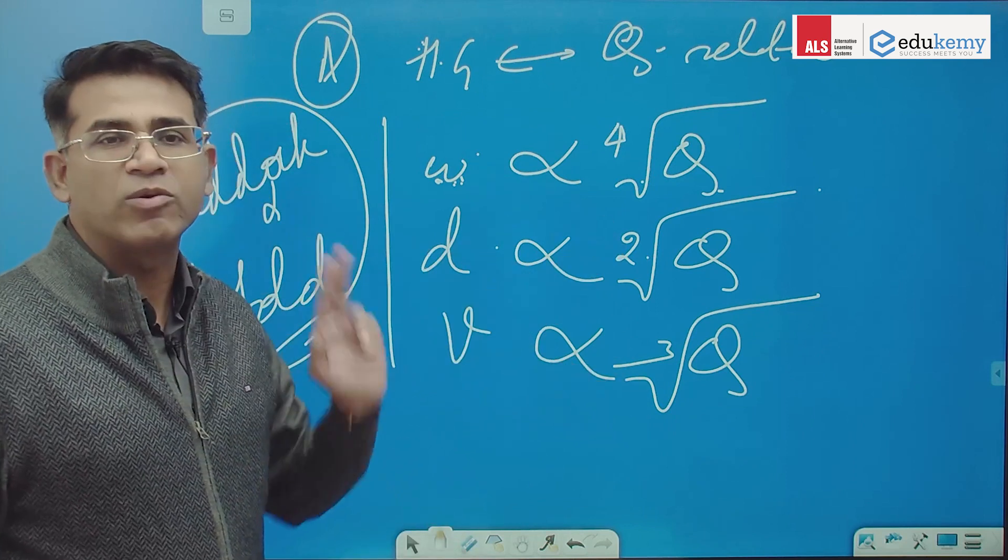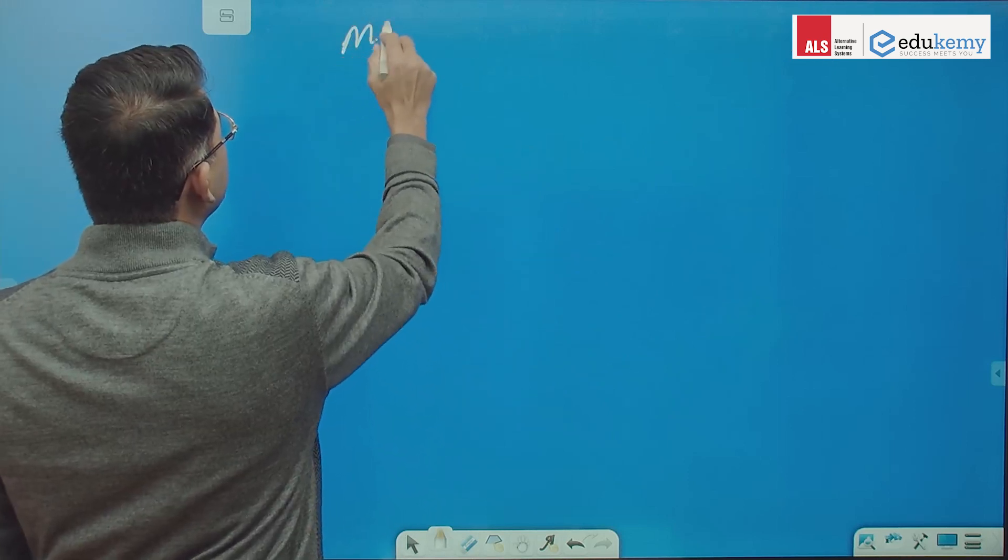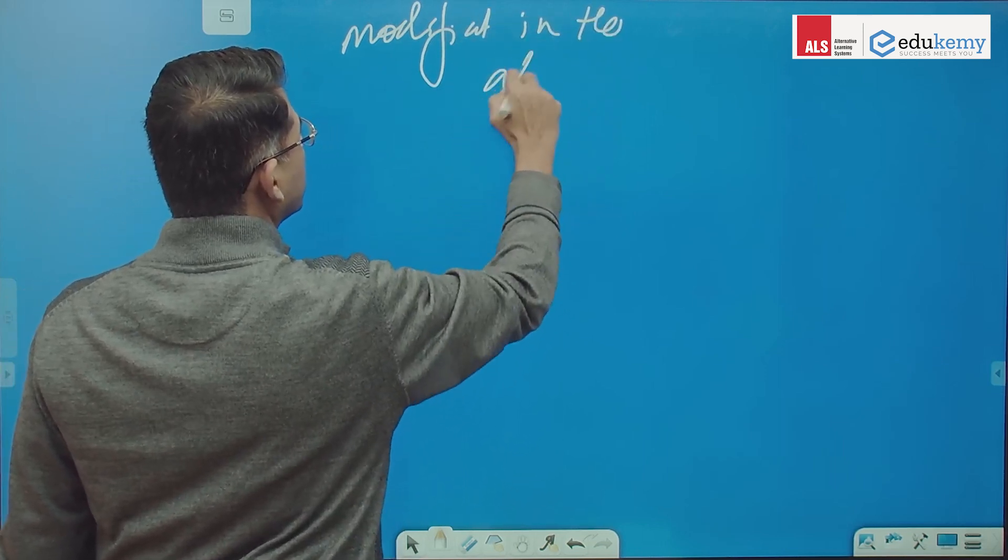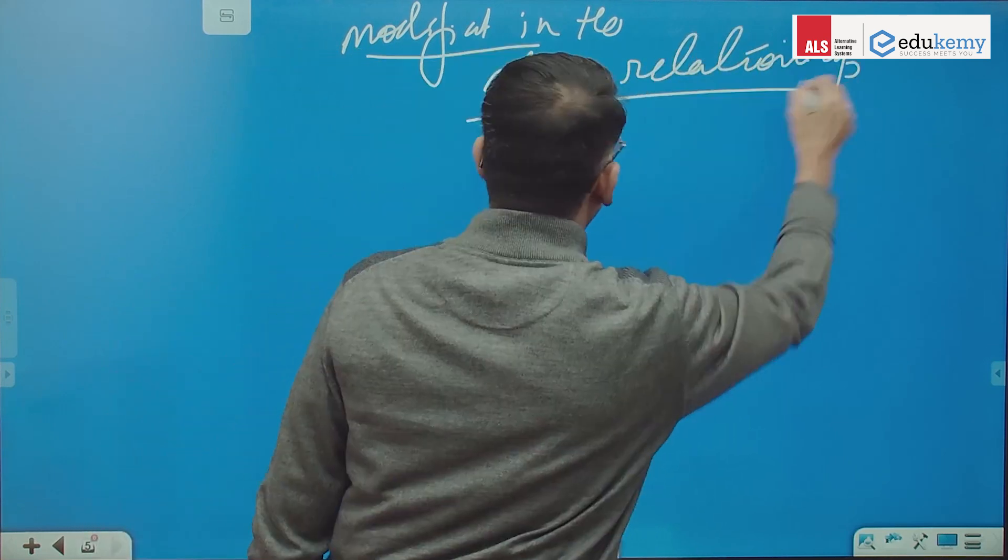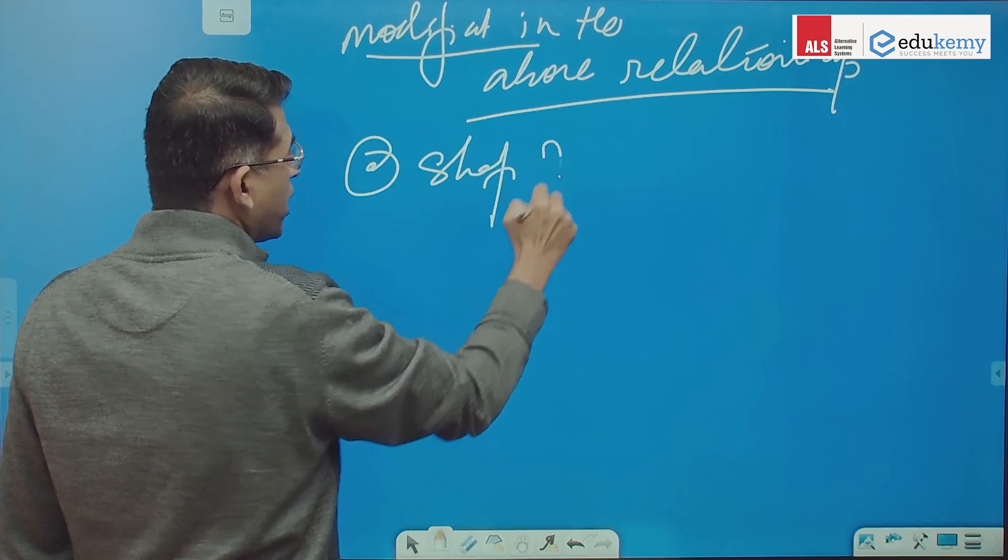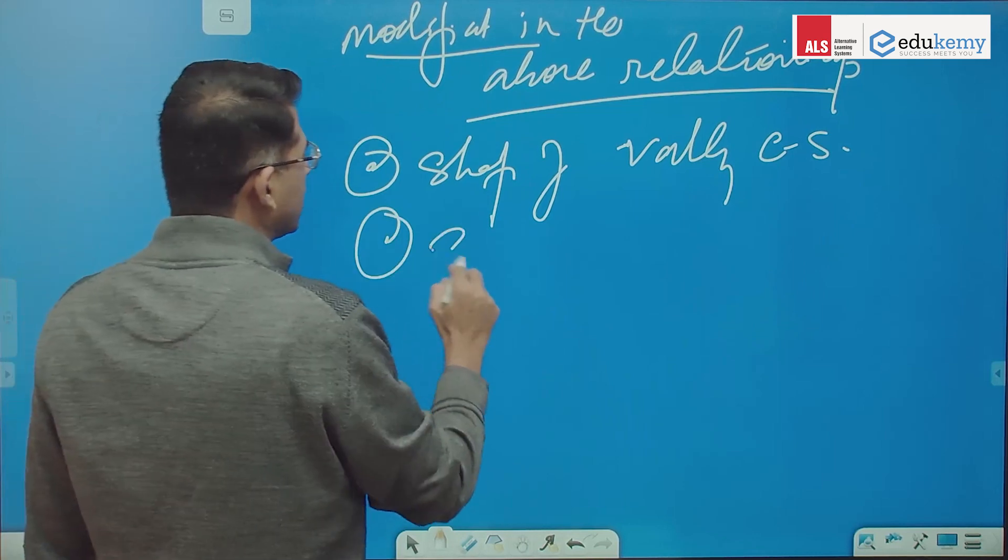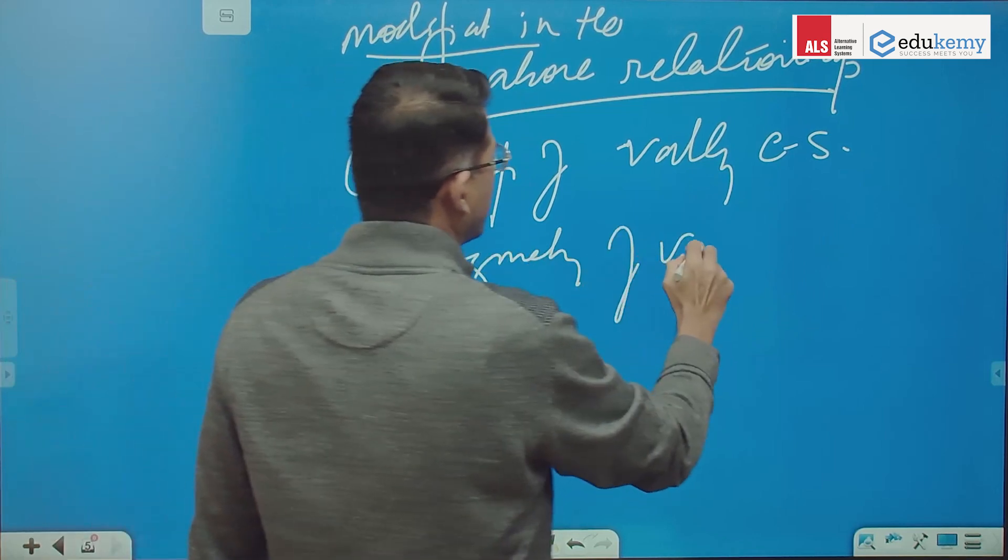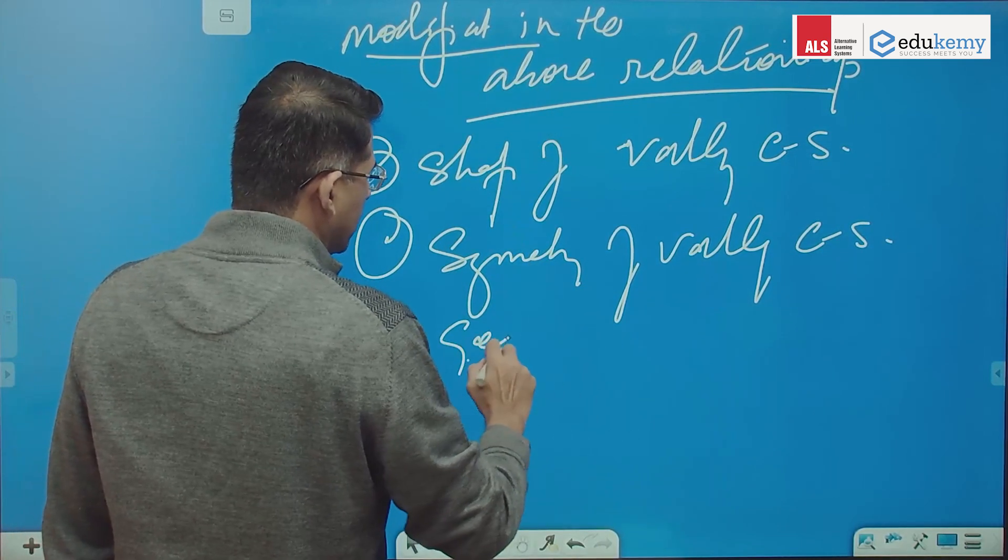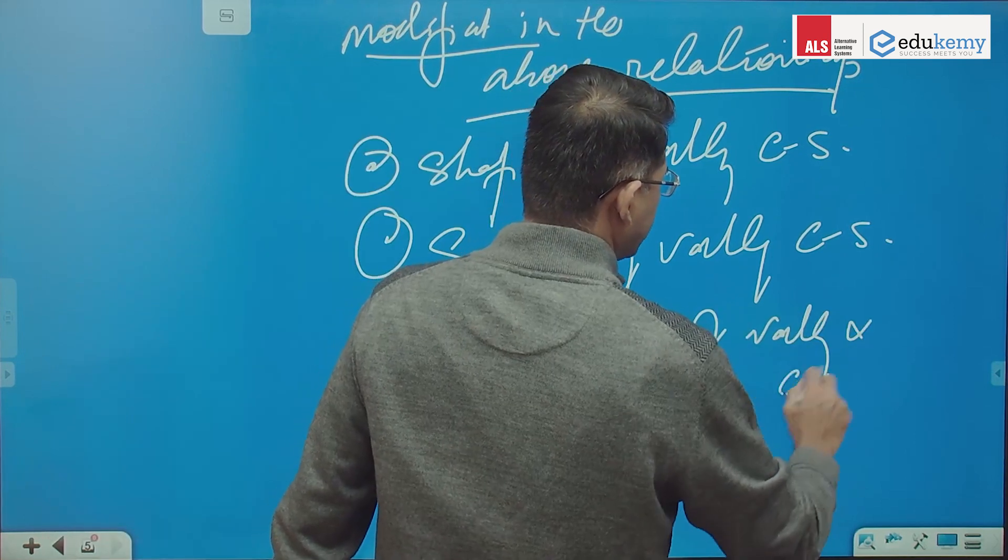This is the relationship. And then I said there are modifications on this, modifications in the above relationship. It depends on the shape of valley cross section, it depends on the symmetry of the valley cross section, it depends on the geomaterial of valley and channel.